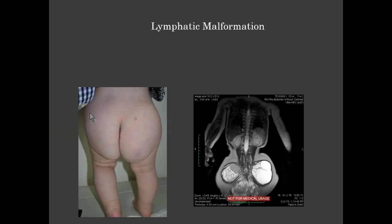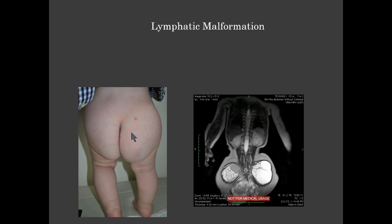This is a patient with lymphatic malformation of her buttocks with extension into deeper structures. She had sclerotherapy at another institution and developed inability to urinate because one of the cysts was compressing the ureter. She ended up having another procedure and so far has been fine. We've discussed rapamycin with the family and are holding off for now, but I'm sure she'll end up going on that medication.